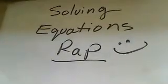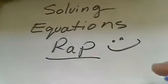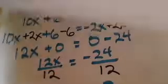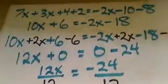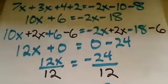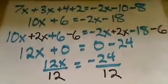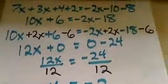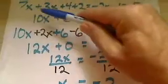Solving Equations Wrap, take 8. The first thing you do is simplify. I'm telling the truth because I don't lie. You have to combine all the like terms with the letter last name that you have to learn.